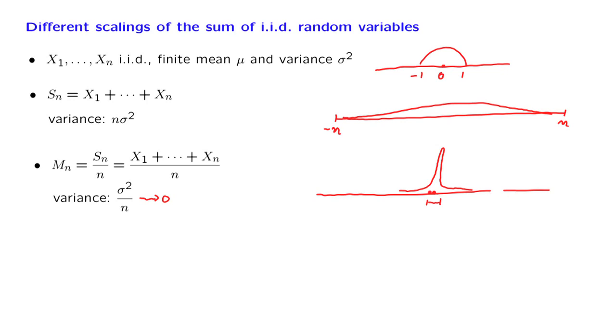So in this case, we obtain a limiting distribution. But this limiting distribution is trivial. It's degenerate. It's all concentrated on a single point. How can we make it so that we obtain a limiting distribution that is more interesting? The key is to divide, not by n, but to divide by the square root of n.